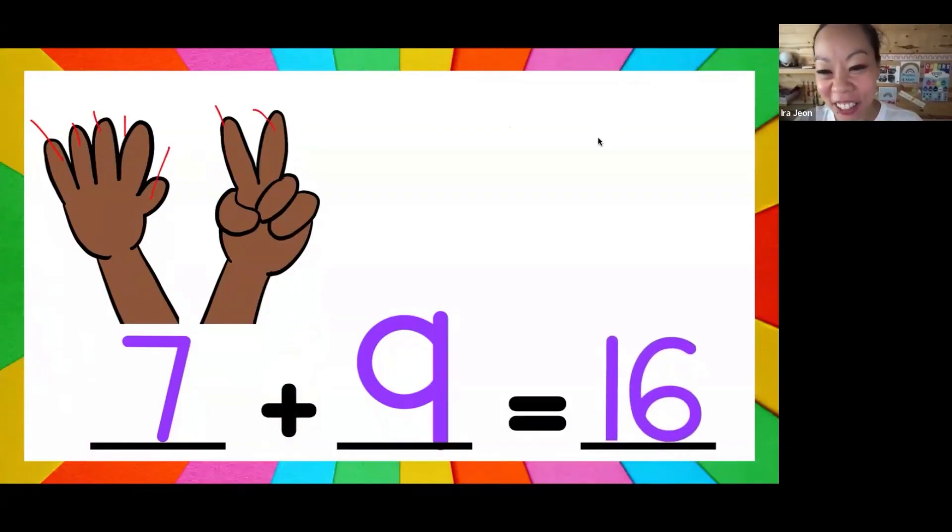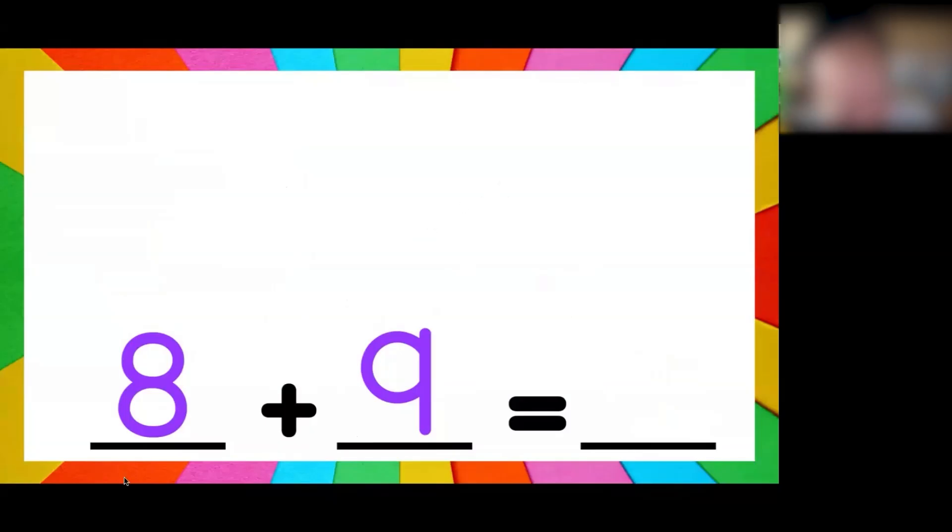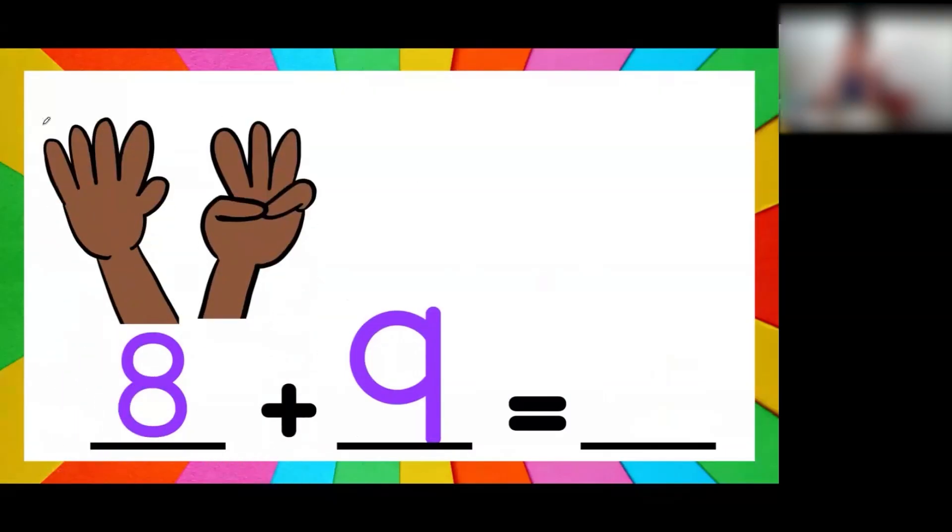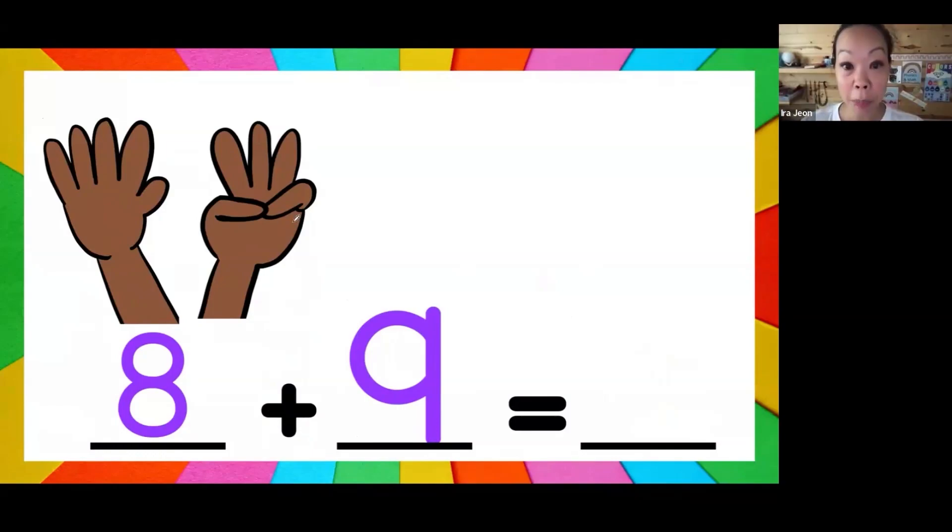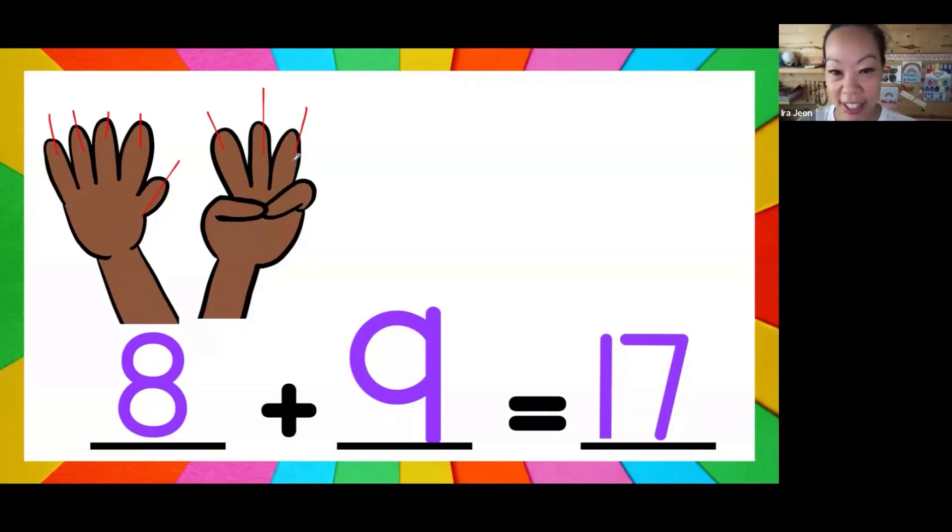Yeah friends, so if you don't have your facts memorized, you're going to have to use a strategy. Okay, can you tell me what number I count on from? Nine, okay. Then we're gonna hold up... oh okay, that's a finger. So count on from 9 and then you go: 10, 11, 12, 13, 14, 15, 16, 17. Oh yeah, that's it. Did you guys get 17?